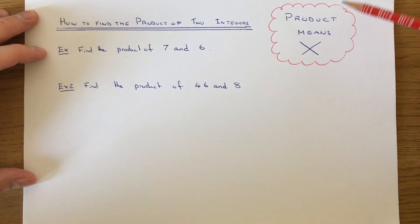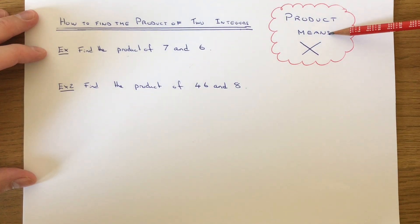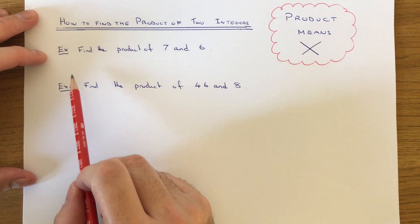To do this, you just need to remember that product means you need to multiply the two numbers together. So let's have a look at the examples here.